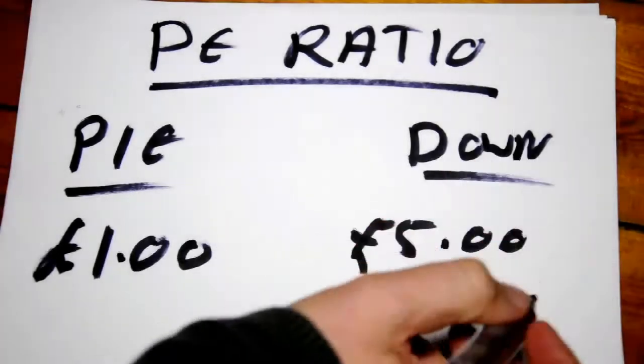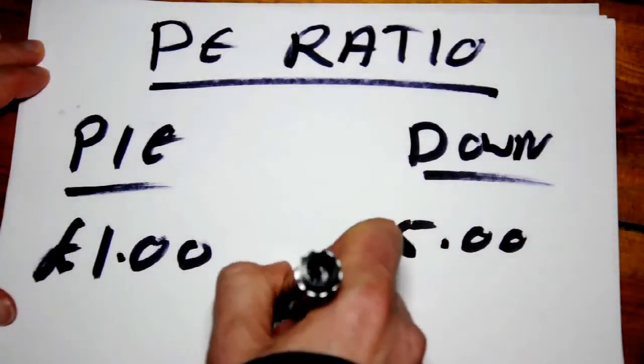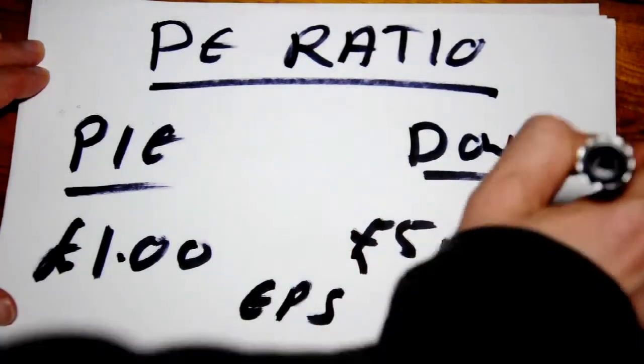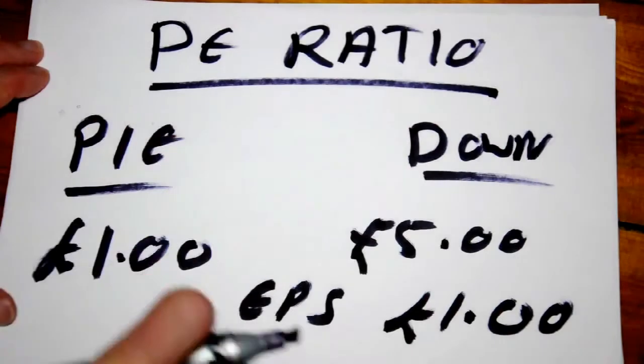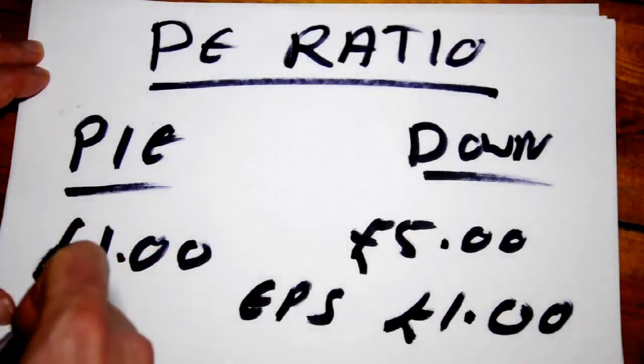But that doesn't give the full story because we know that Down to Earth has earnings per share, that's EPS, of one pound each year or in the current year. And Pie in the Sky has earnings of a penny.